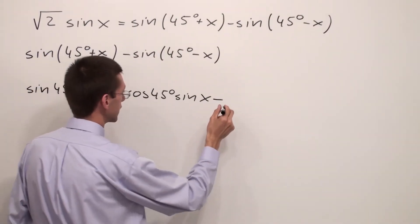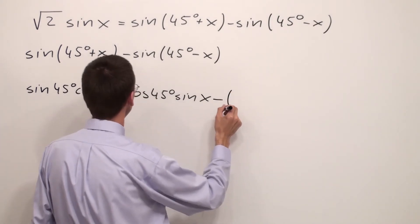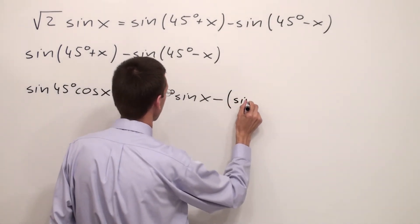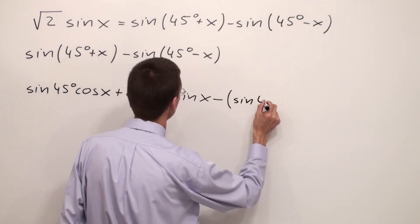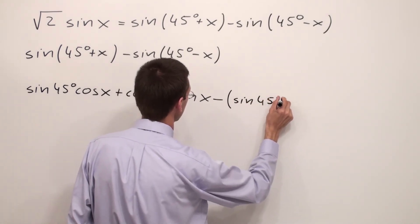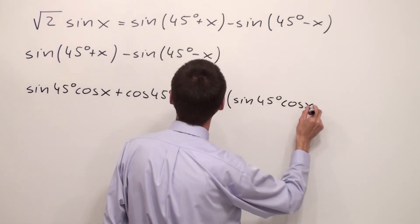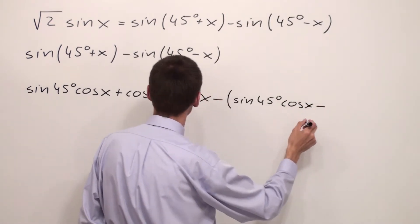Minus, this time I'm going to use parentheses. I have sine of 45° cosine x minus cosine 45° sine x.